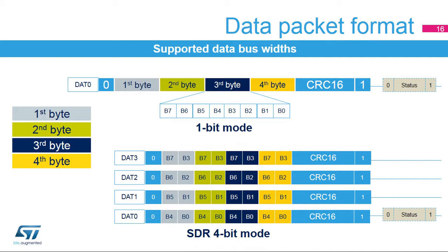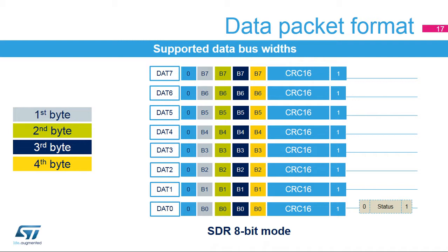First, a start bit is generated on the bus, followed by the data packet with the first-to-last bytes of the sequence. Then the CRC16 and end bit are appended to the data packet on the bus line. In a four-bit data width configuration, each line has its own start bit, end bit, and CRC16 checksum. When the data is sent to the card, the card returns a CRC status on the SDMMC D0 pin. In this example, the four bytes are sent over the SDMMC bus in 8-bit mode.